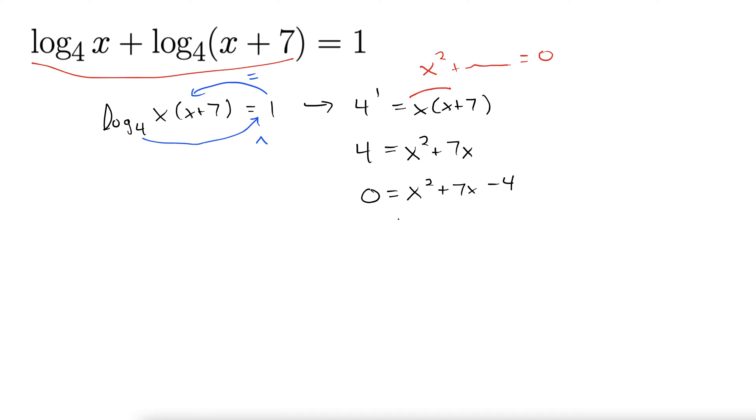Well, it would be really nice if we could factor this, but it doesn't. We would need factors of negative 4 that add up to 7. Not going to happen. That does not factor. But we don't give up when something doesn't factor. We have a formula for that. It's the quadratic formula.